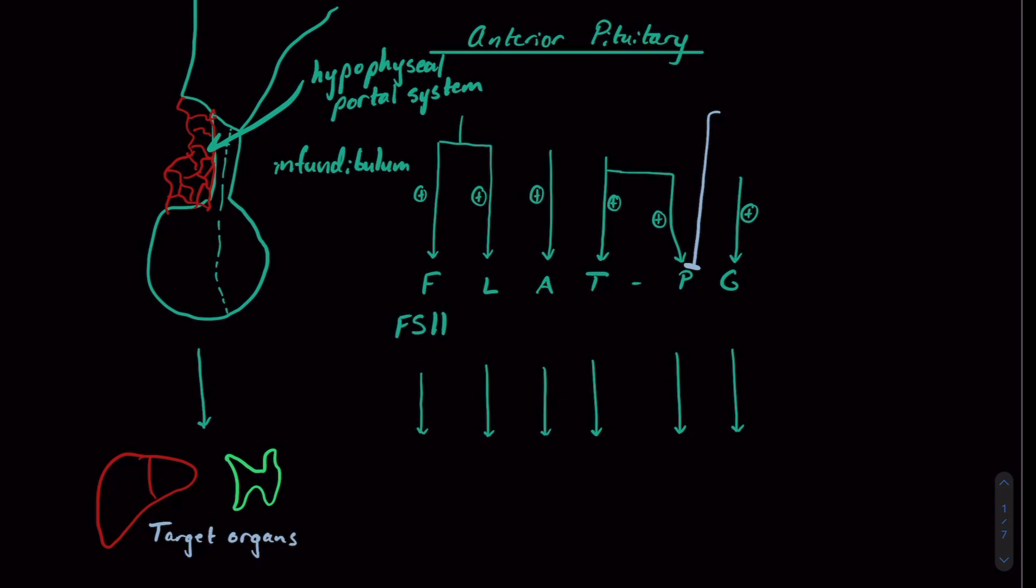F stands for FSH, follicle stimulating hormone. This is a hormone secreted from the anterior pituitary. LH is luteinizing hormone. Both of these are stimulated to be synthesized and released from the anterior pituitary by a hormone from the hypothalamus called gonadotropin releasing hormone. FSH and LH act on the ovaries and testes in females and males respectively.